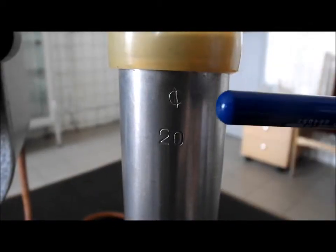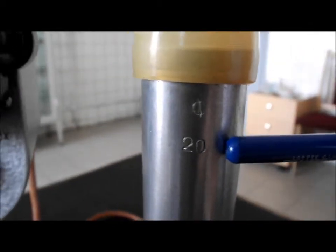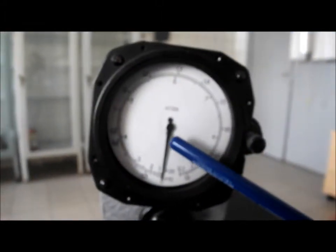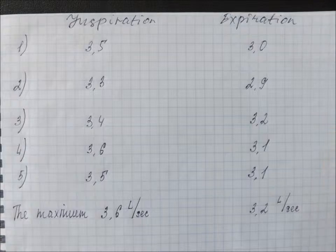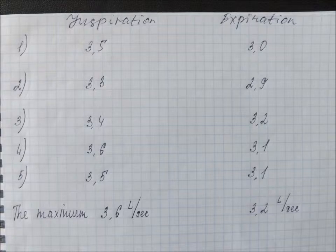When using a sensor with 20mm diameter, the values are registered by the internal scale of the pneumotachometer. Here you can see the results for inspiration and expiration. The maximum is 3.6 liters per second and 3.2 liters per second.